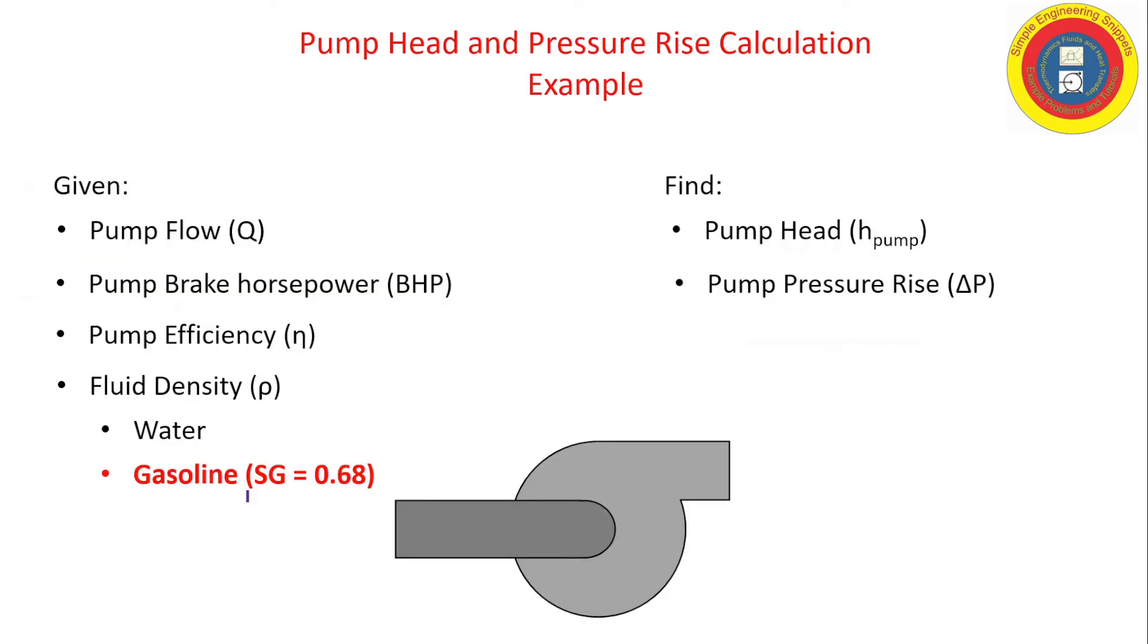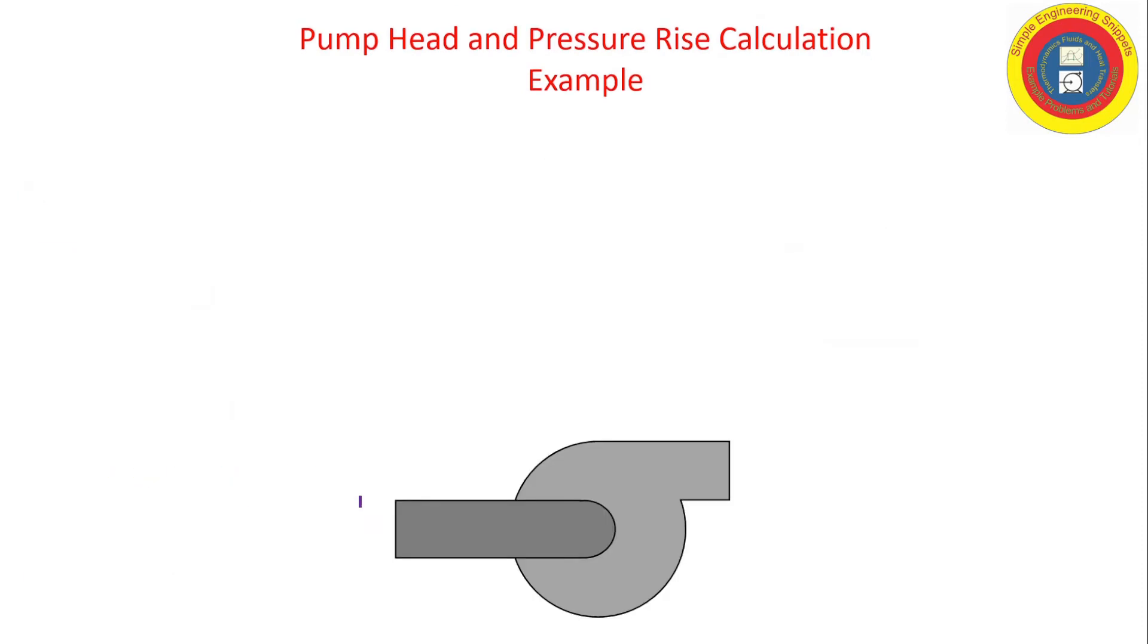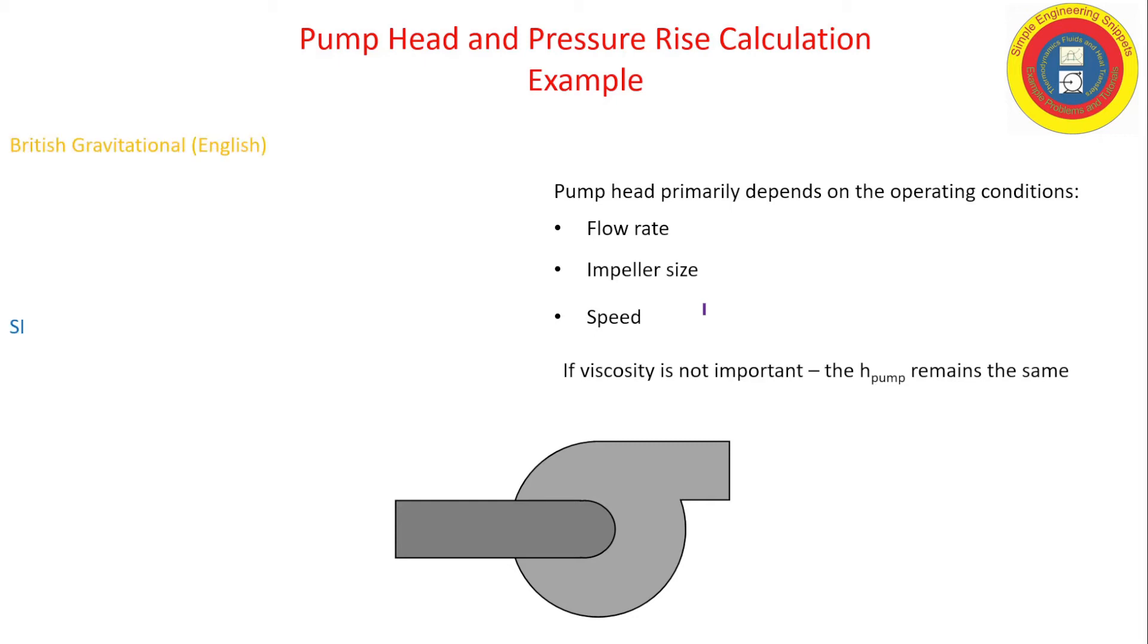And now let's repeat that for specific gravity 0.68 for gasoline. Okay, but before we dive into it, let's review what we mean by pump head. It's energy per weight, and pump head really depends upon flow rate, impeller size, and speed. Now this is true as long as the viscosity is not a major player, which is typical for most fluids.